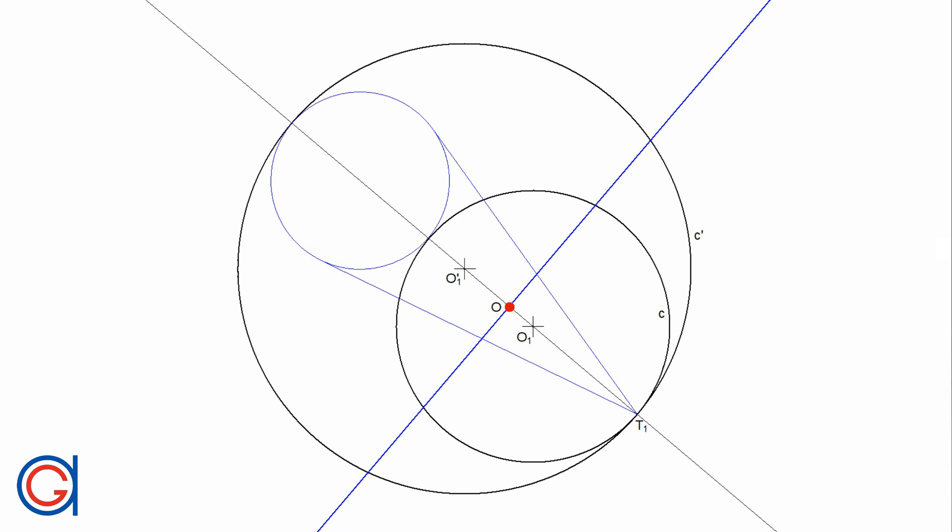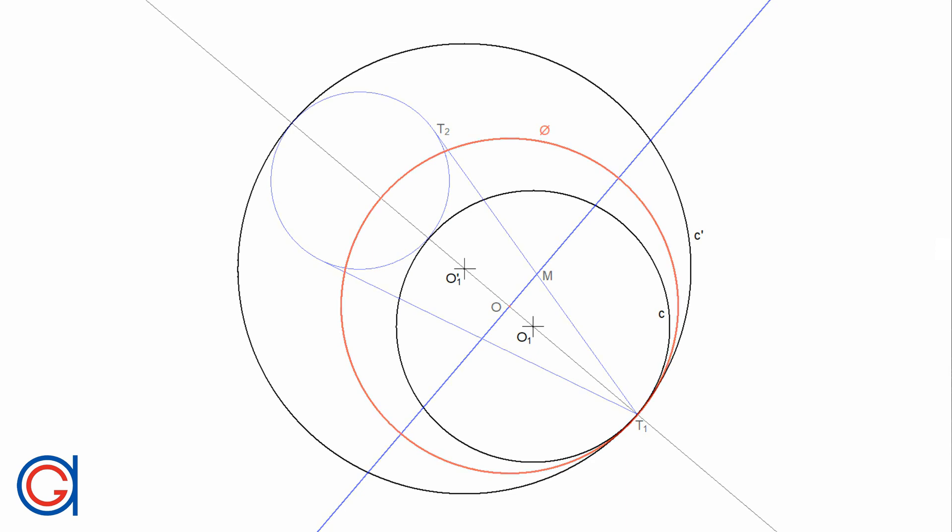Now we will draw the tangent line segments to this circle from the tangent point T1 of the two inverse circles C and C'. If we join the mid-points of these tangent line segments, this line will cut the line R at a point which will be the center point of the mid-circle, highlighted in red. The radius of the mid-circle is the distance between O and T1.